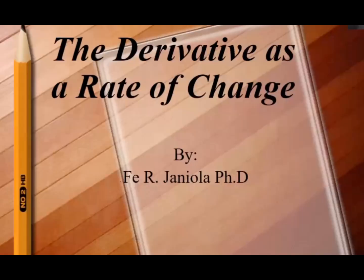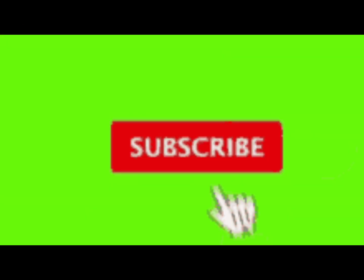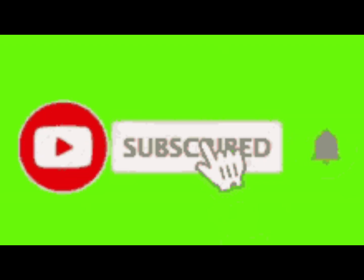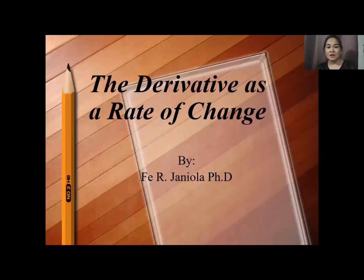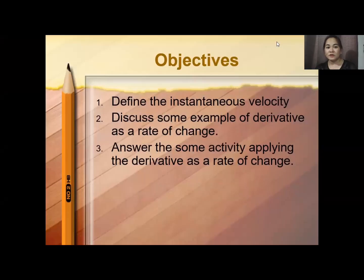This time we will discuss the derivative as a rate of change. The objectives are: define the instantaneous velocity, discuss some examples of derivative as a rate of change, and answer some activity applying the derivative as a rate of change.